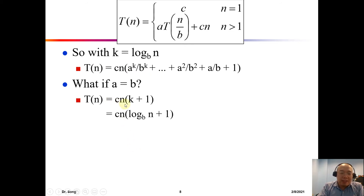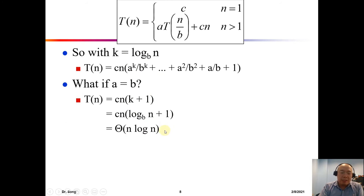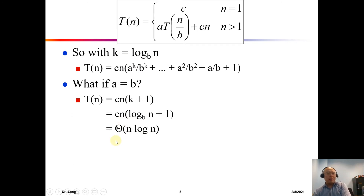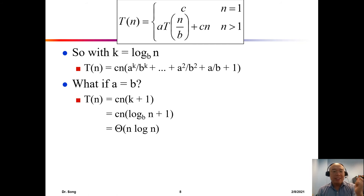T(n) will be cn times (k+1). Since k = log_b(n), substituting gives T(n) = cn·(log_b(n) + 1), which expands to Θ(n log n). Does that sound familiar? That is merge sort — merge sort is the case when a equals b.